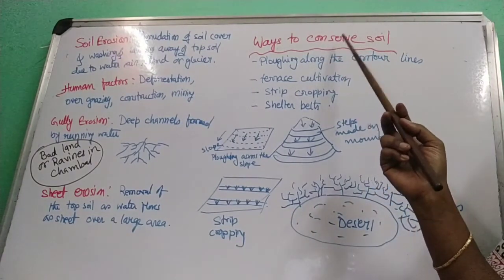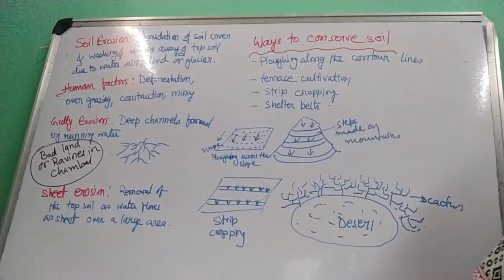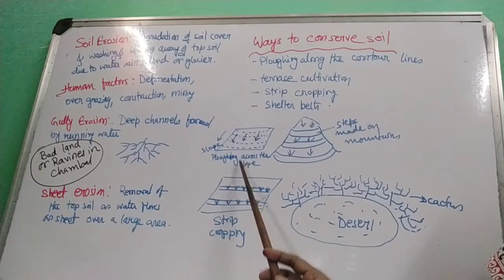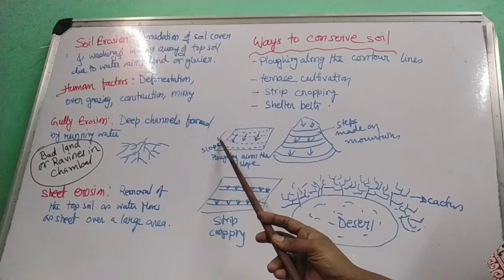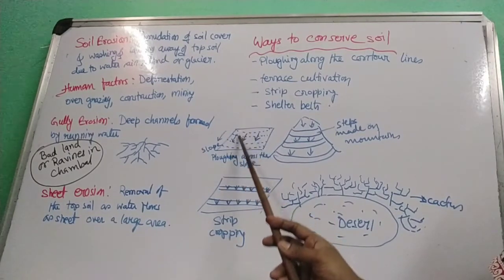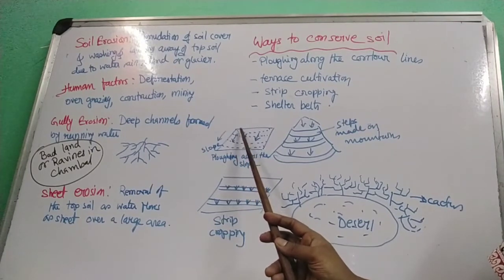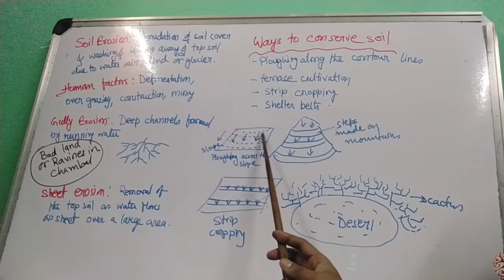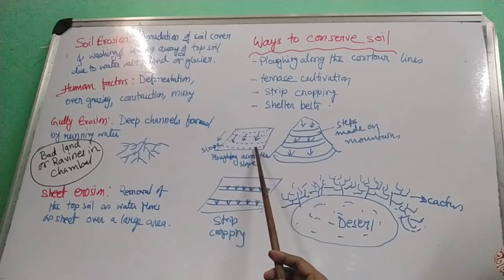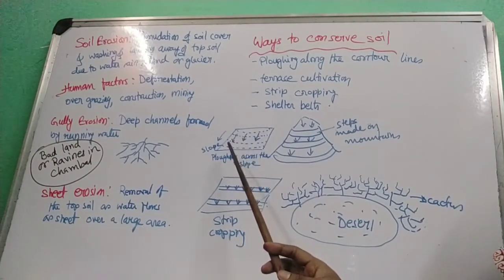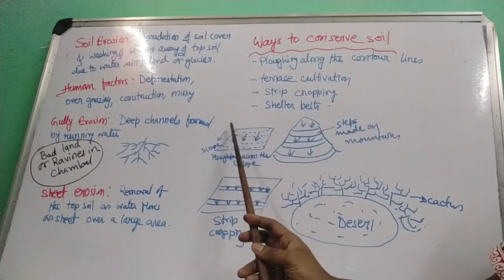To conserve soil, the first method is plowing along contour lines. Contour lines are imaginary lines joining places of the same height above sea level. If a land has a downward slope, we should not plow along the slope — instead we plow across it. If we plow along the slope, water easily carries the soil away. But if we plow across the slope, the raised ridges act like bunds and prevent the soil from being washed away.